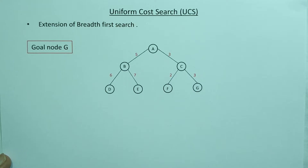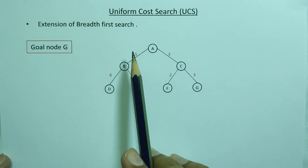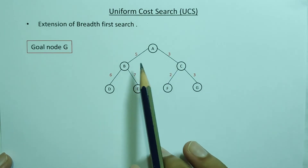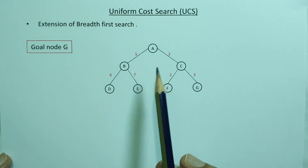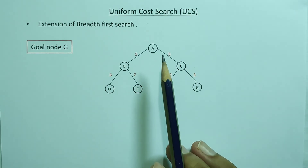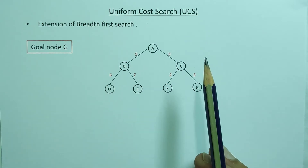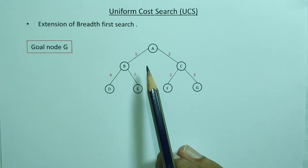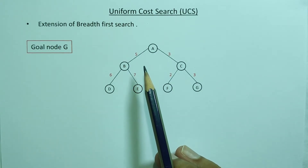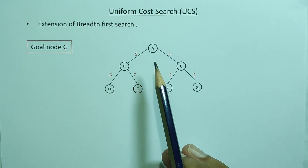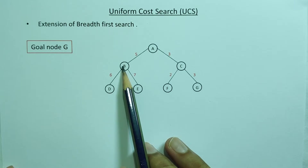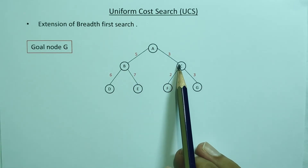Uniform Cost Search is basically an extension of BFS Search. We have a graph with costs. In BFS Search, the cost is not considered, but in Uniform Cost Search, we consider the cost. The cost needs to be less than a threshold to build the BFS Search from a node.